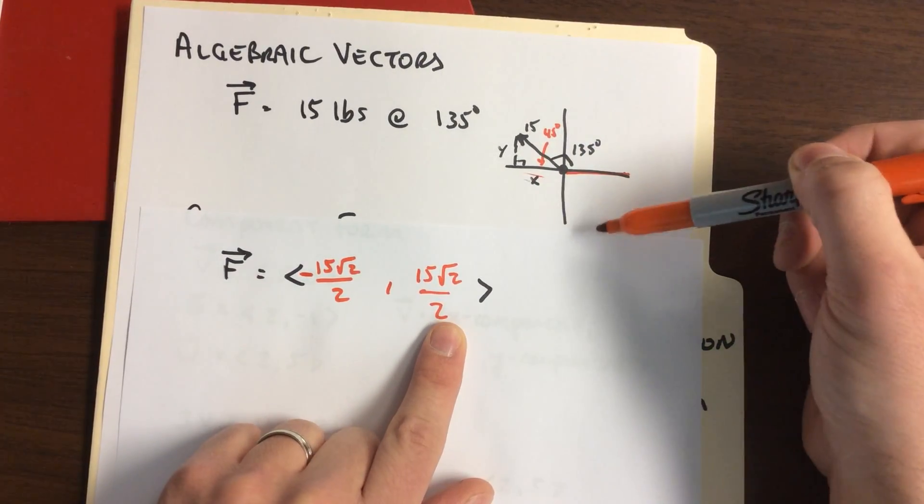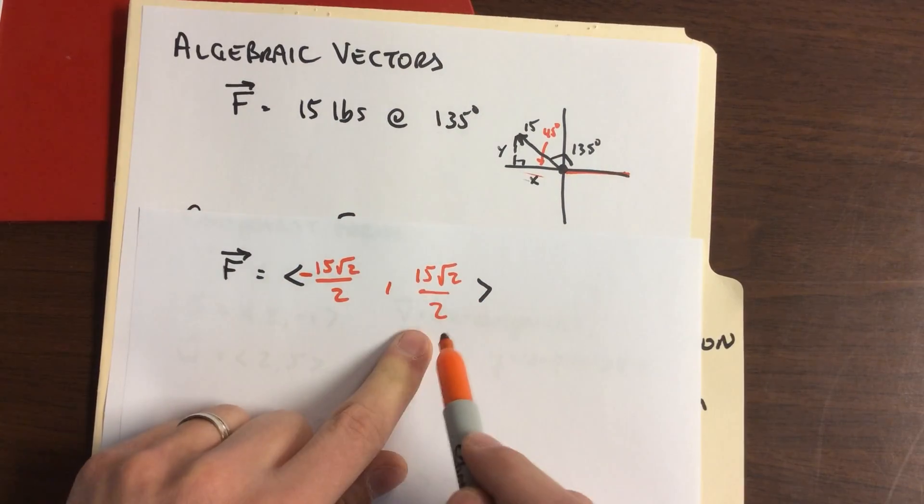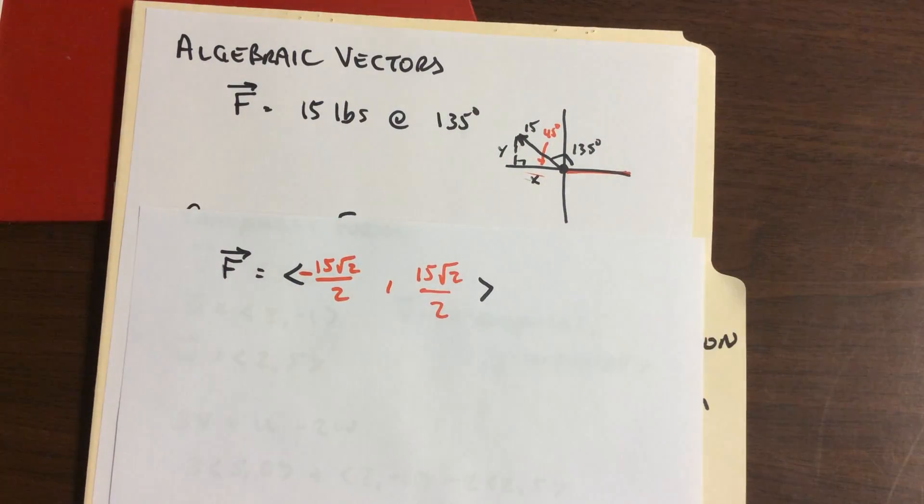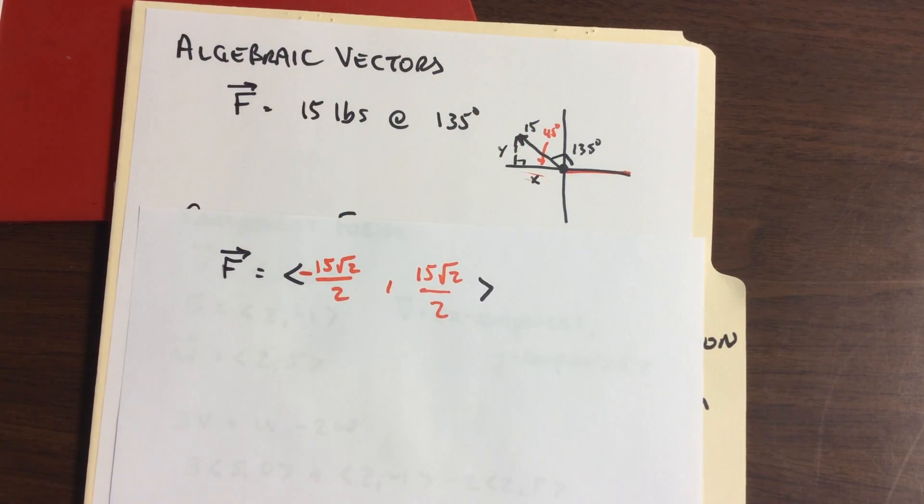Quadrant 4, cosine's positive. So the x will be positive, the y will be negative. We can take this, and it connects immediately to what we've done before. We can take a vector as we have it, write it in component form. Not so bad.